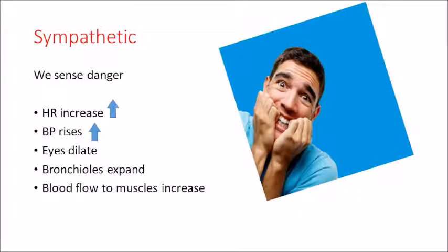The sympathetic system dominates when we are active and aroused. When we sense danger, a person thinks of flight, gets frightened, or fights. Heart rate increases — we all would have experienced this — BP also rises, the eyes dilate, bronchioles expand, and blood flow to muscles increases, raising muscle tone. This is how the sympathetic system works.